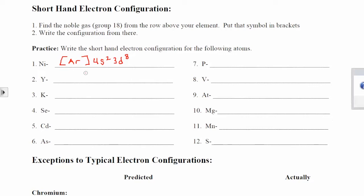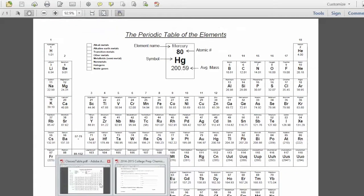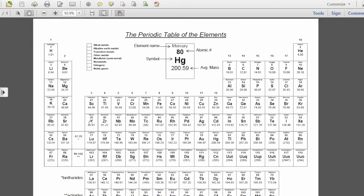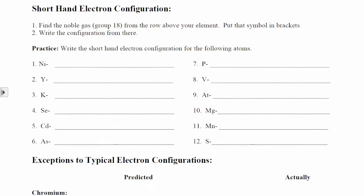Now I'm going to write the electron configuration for yttrium with you, and then you'll do a couple on your own. Looking at the periodic table, you've got Y — yttrium — right here. Remember, you're going to move up one row and all the way across to your noble gases, which in this case is krypton. So I put krypton in brackets: [Kr], and then continue on from there.